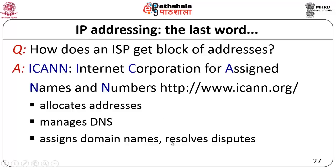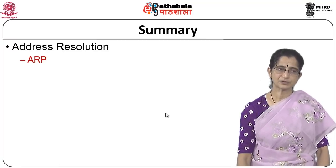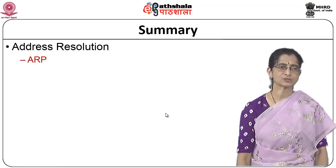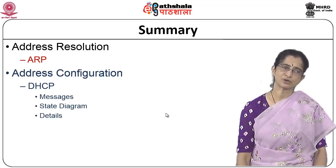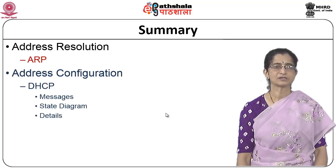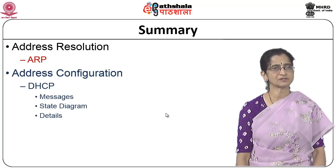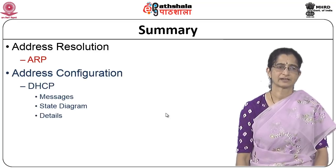To summarize, this module covered two main topics: first, the address resolution protocol ARP and its details; and second, address configuration done with the help of DHCP — including DHCP messages, the state diagram, and protocol details. This completes the picture on IP addressing, covering classful and classless addressing, address management protocols, and how IP addresses are managed by international organizations.